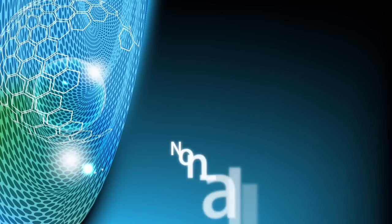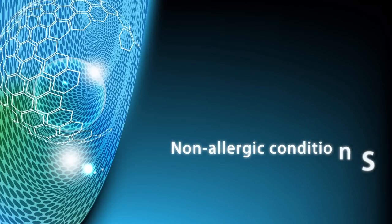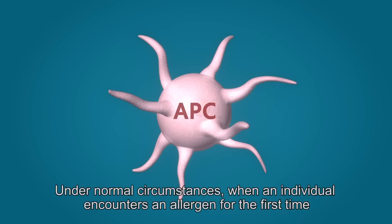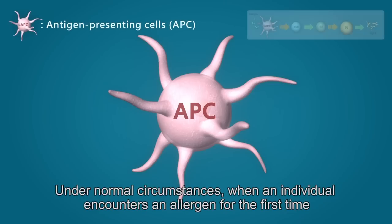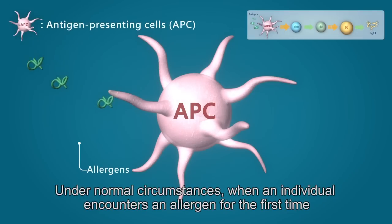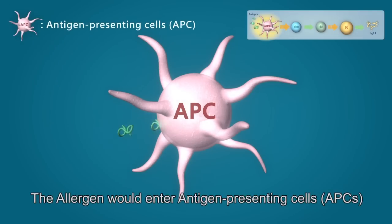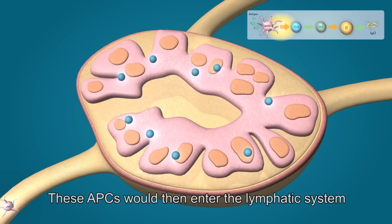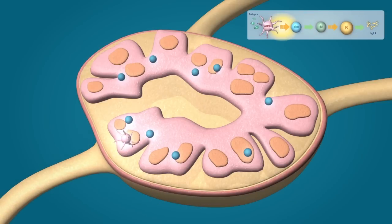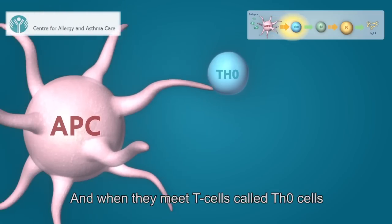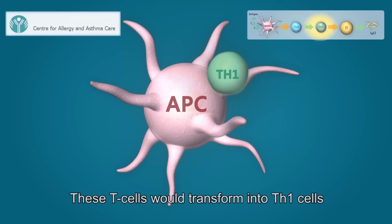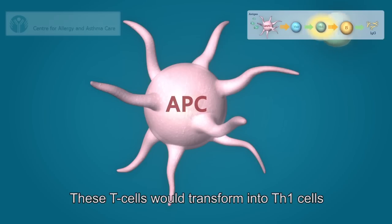Non-allergic reactions. Under normal circumstances, when an individual encounters an allergen for the first time, the allergen would enter the antigen-presenting cells, or APCs. These APCs would then enter the lymphatic system, and when they meet T cells called Th0 cells, these T cells would transform into Th1 cells.